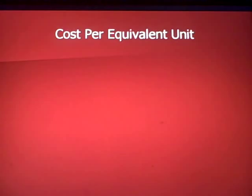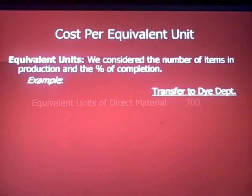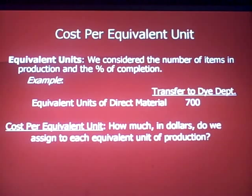We're going to talk about a new concept now: cost per equivalent unit. We consider the number of items in production and the percentage they're complete. For example, we saw in an Excel slide that we were transferring to the next department — the dye department — 700 equivalent units of direct material. Something new is cost per equivalent unit: how much in dollars do we assign each equivalent unit of production? So far we've only talked about units and amount of costs incurred, but we have not talked about dollar costs yet.